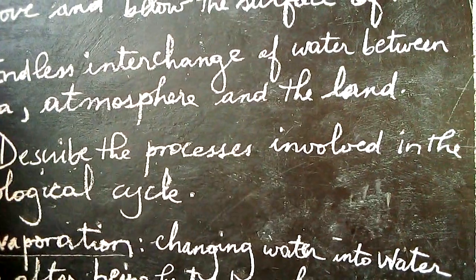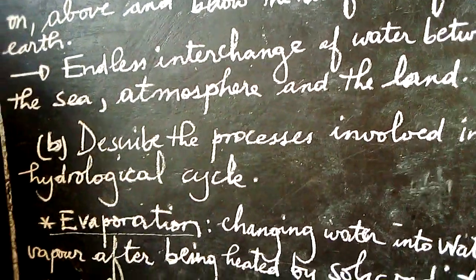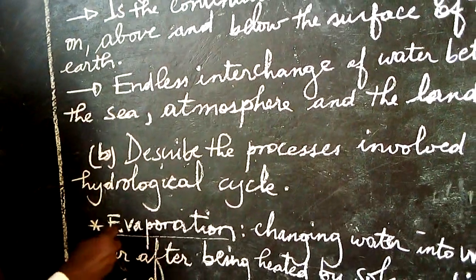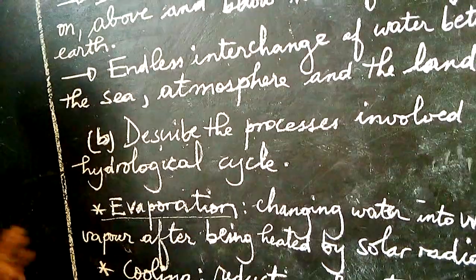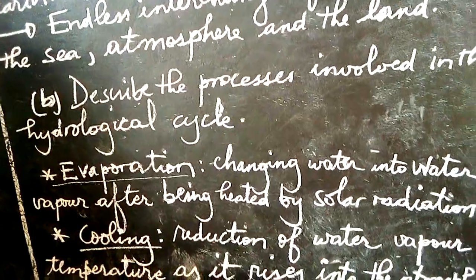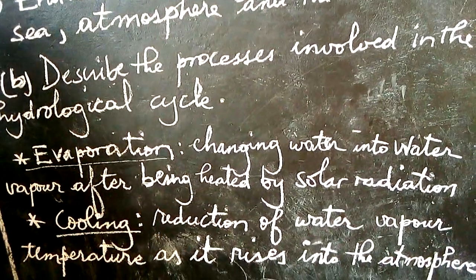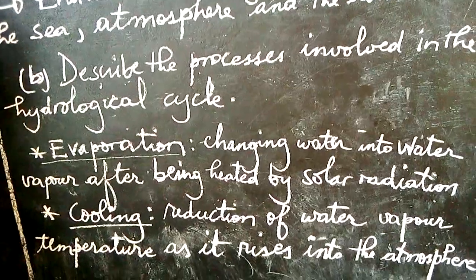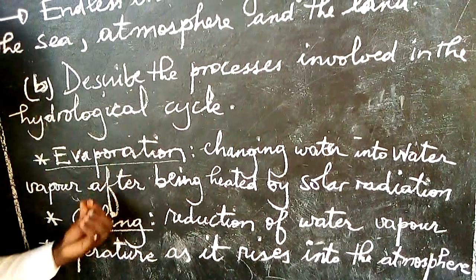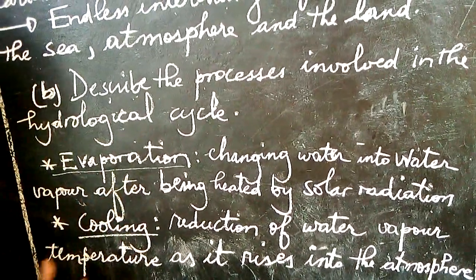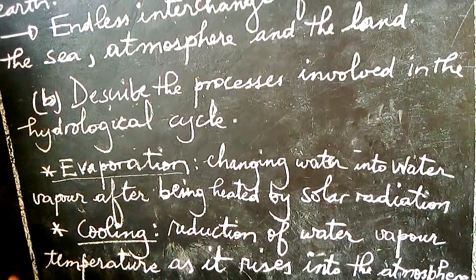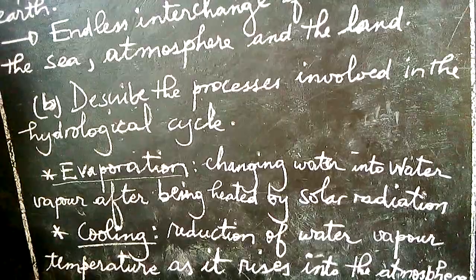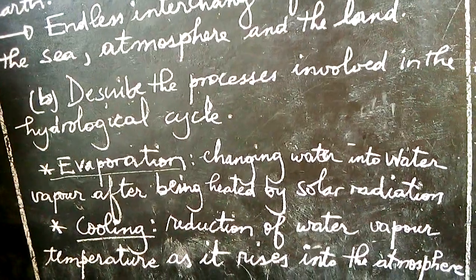We are going to see how this hydrological cycle of water occurs. Let's start with evaporation. When we talk of evaporation, this is the changing of water into water vapor after being heated by solar radiation. Meaning that after the water gets heat and becomes heated, it will start becoming like a gas. That is what we call evaporation.